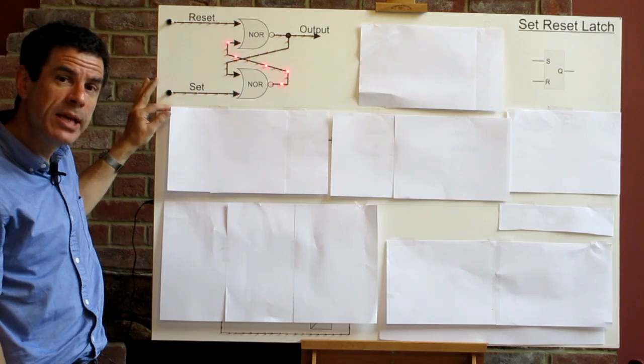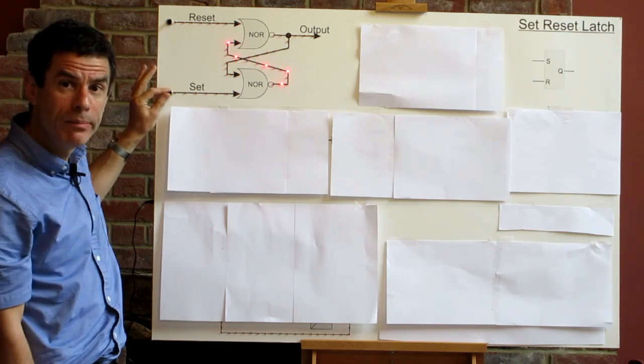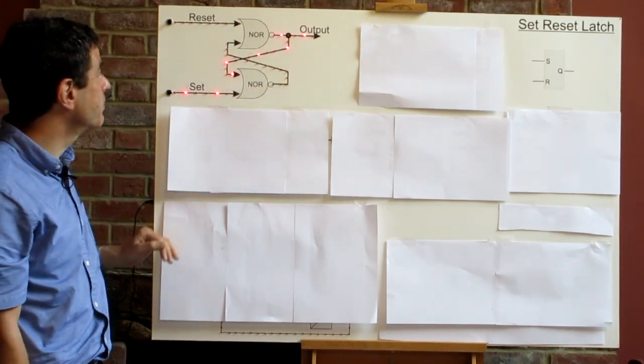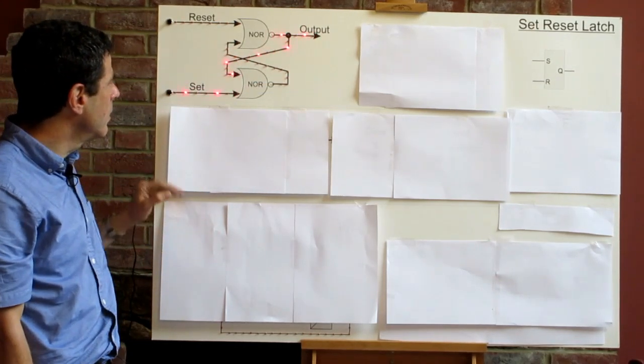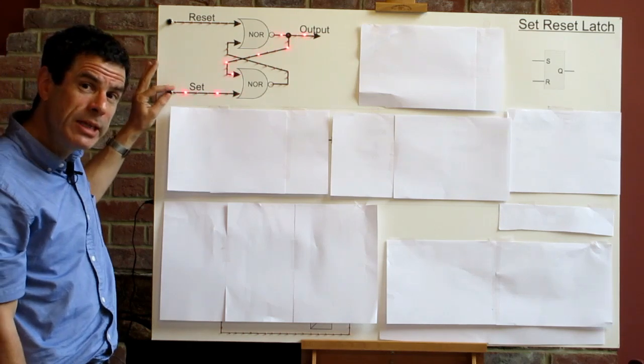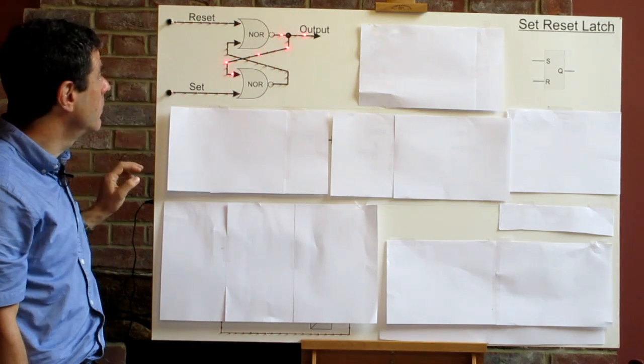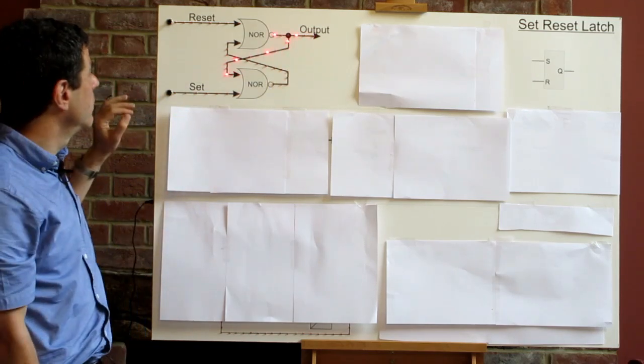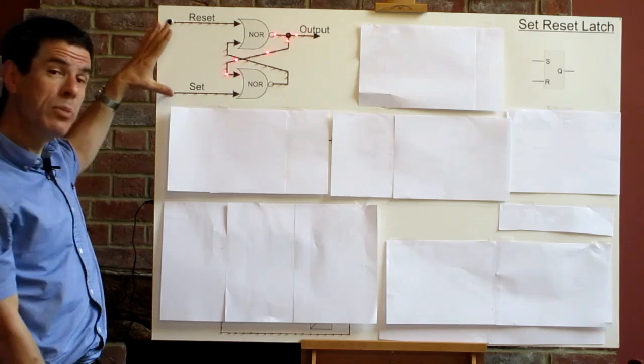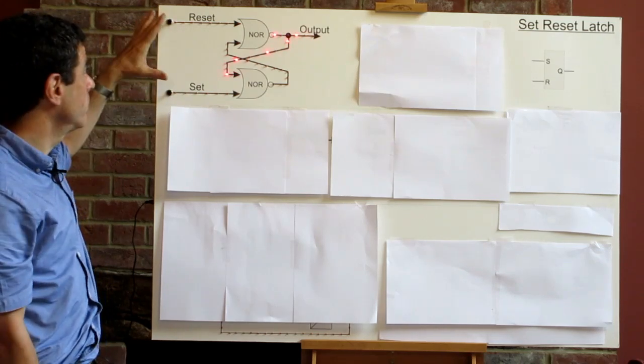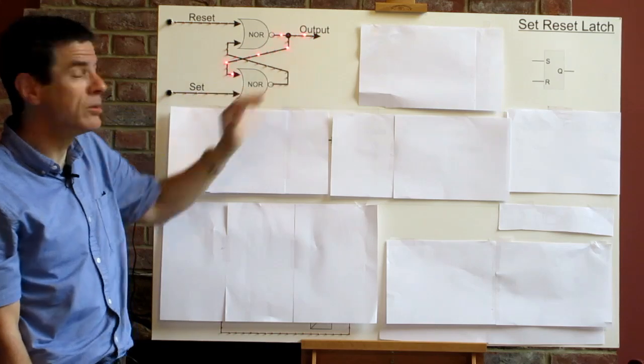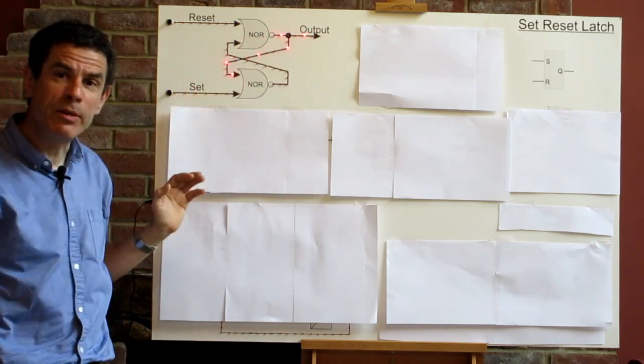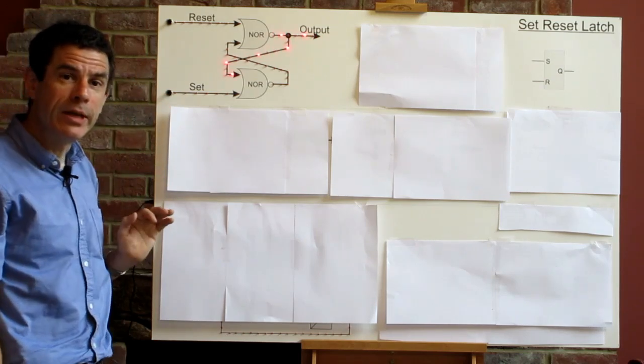For now take the set input high. Our output becomes high because of the way the logic flows. For now take the set input low. Our output remains high. So we have the same input conditions as we started with, both of these inputs being low, but our output is now different. It's got a memory. It's remembered that the last thing we did was take the set input high.